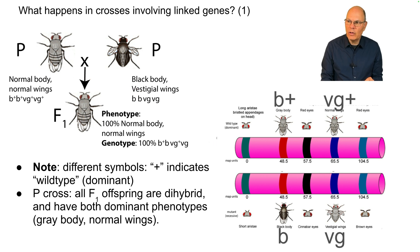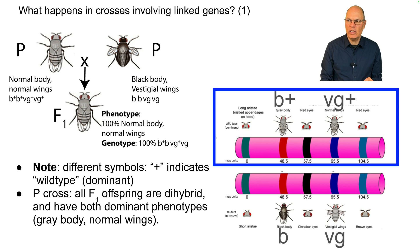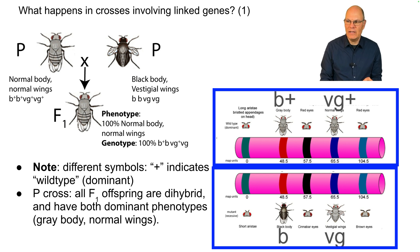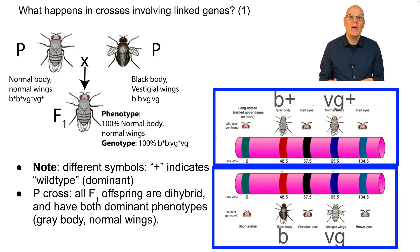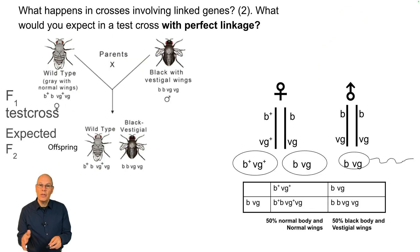Here we're representing this chromosomally: B+, VG+ are on the same chromosome, and B, VG are on the same chromosome. These genes are linked.